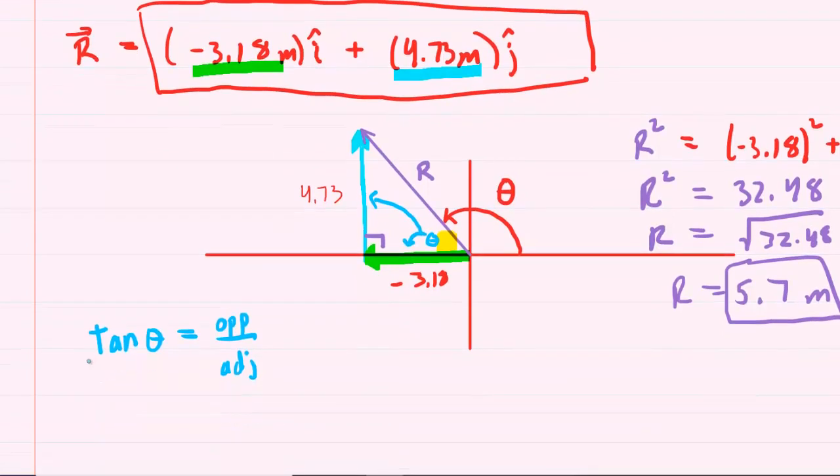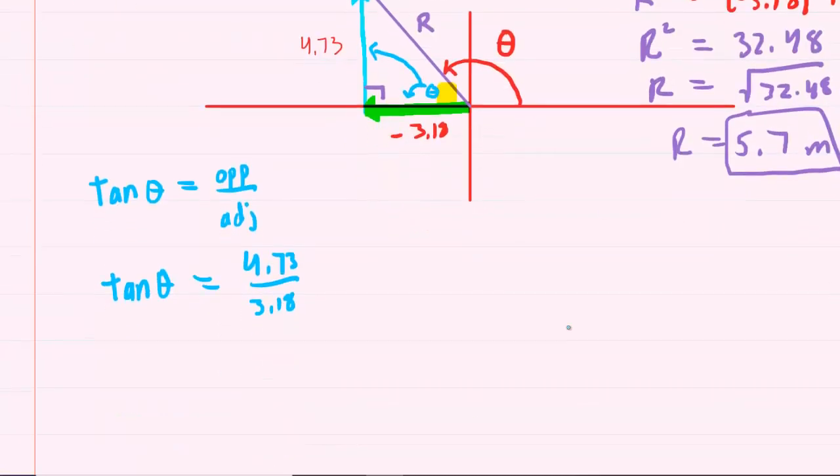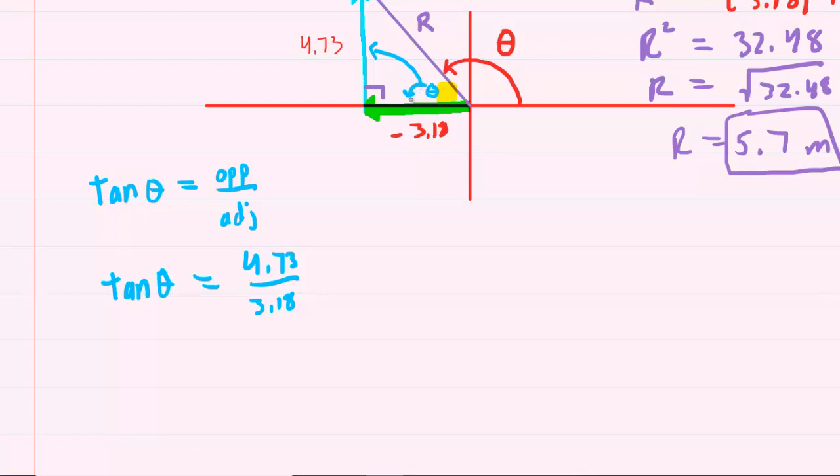Now, I know that it says negative 3.8 in the drawing, but when you find this angle inside of the triangle, I recommend just using the positive version of these numbers. So in other words, use positive 4.73, but also use positive 3.18. The reason is we are not necessarily interested in the blue angle as our final answer, so we don't want to worry about negative signs. We just want to get an overall angle, a positive angle, inside of this triangle. Now, when you divide 4.73 by 3.18, you get 1.49 approximately.